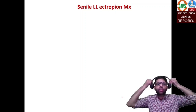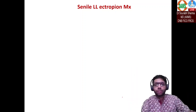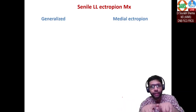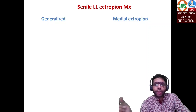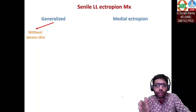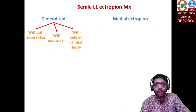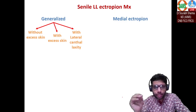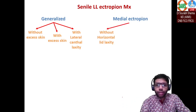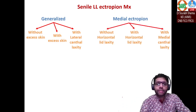Management of senile lower lid ectropion depends on whether it is a generalized ectropion — the entire lower lid turning outward — or only the medial part. For generalized ectropion, consider whether there is excess skin or associated lateral canthal tendon laxity, which you have already tested with the distraction test.